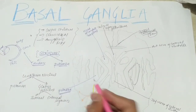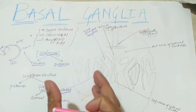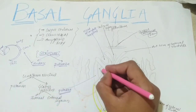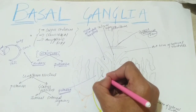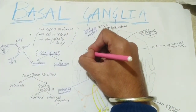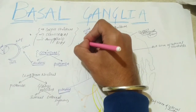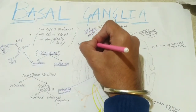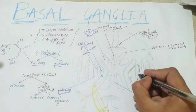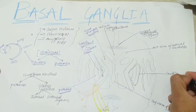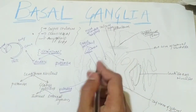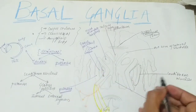So this is actually putamen, and just medial to it is the globus pallidus. The outermost part is your putamen, and this internal part is your globus pallidus, which has two segments — internal and external. Combining both we call it globus pallidus. And this whole structure — putamen plus globus pallidus — is your lentiform nucleus. The inner part is globus pallidus, the outer part is putamen, and combining both we call it lentiform nucleus.